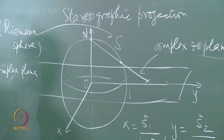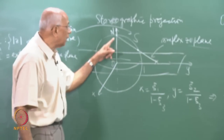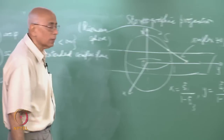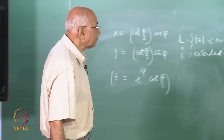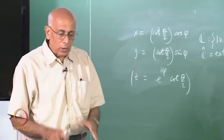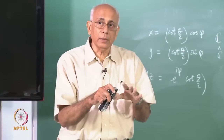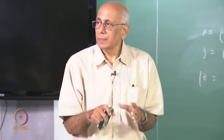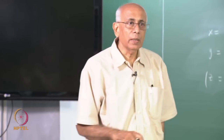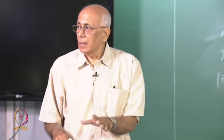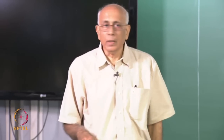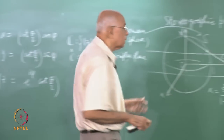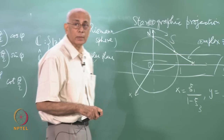Geometrically it is obvious that N represents the point at infinity. That is why very often in complex analysis I will loosely say that there is just one point at infinity. I might tend to it in different directions — what I mean by that is this point N on the Riemann sphere.